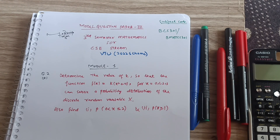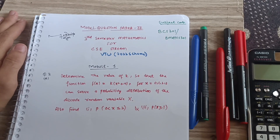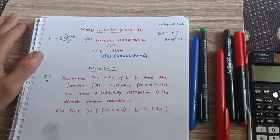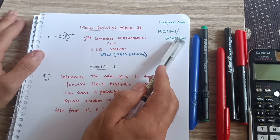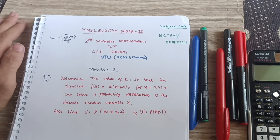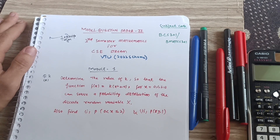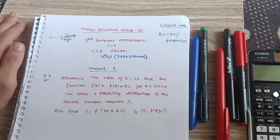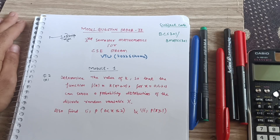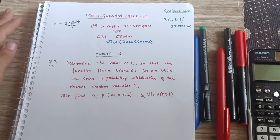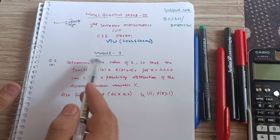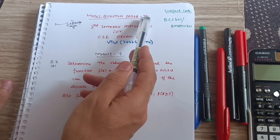Welcome back, dear friends. Hope you are all doing well. We are discussing the model question paper for mathematics CS stream, subject code BCS301/BMATCS301. I have uploaded probably seven videos on this particular stream. If you have not watched them yet, the links are in the description box. Today I will deal with model question paper set number two.